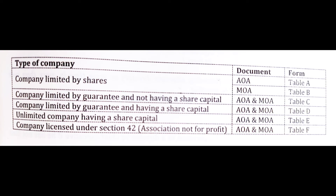Coming to the very last one — that is Companies Licensed under Section 42, that is associations not for profit — then for both the articles of association and the memorandum, you need to refer to Table F of the Companies Act.